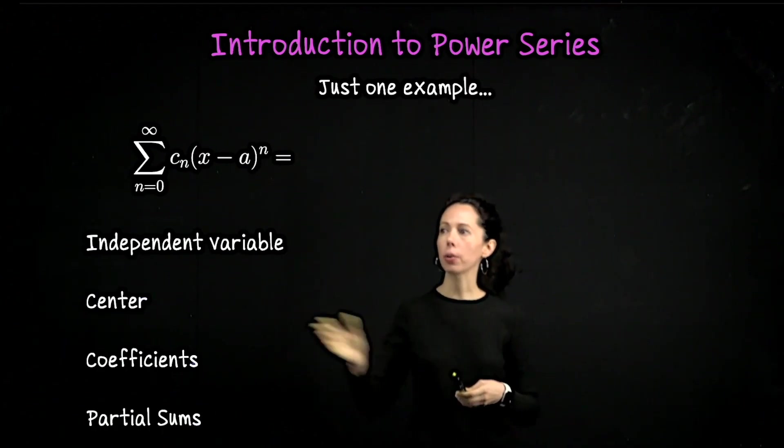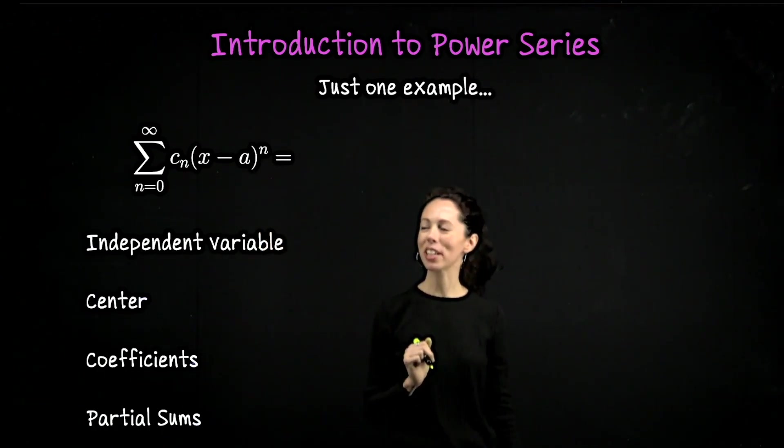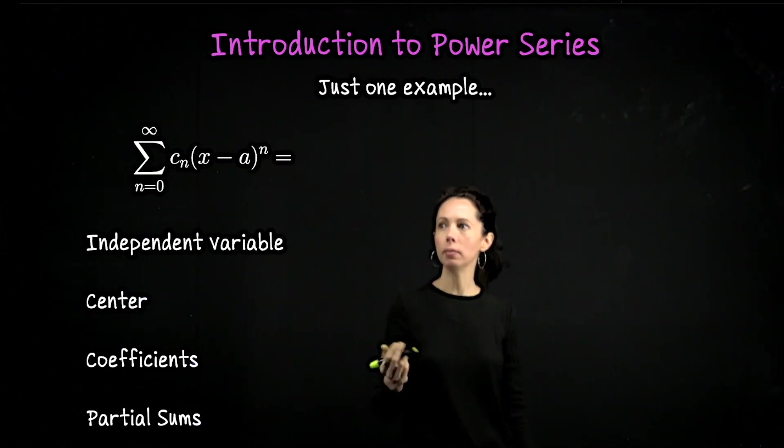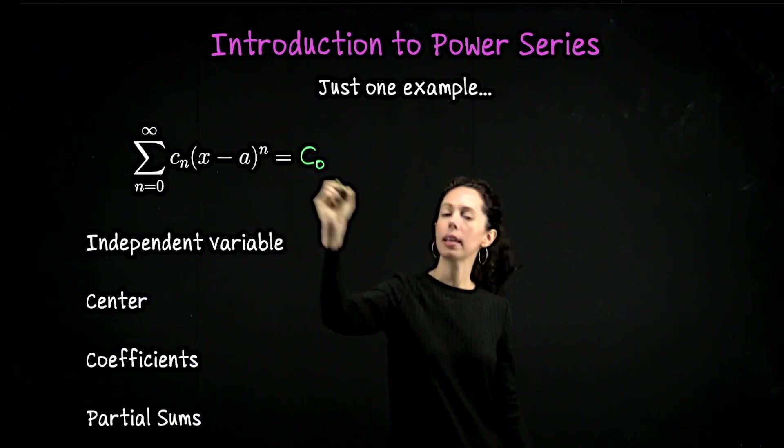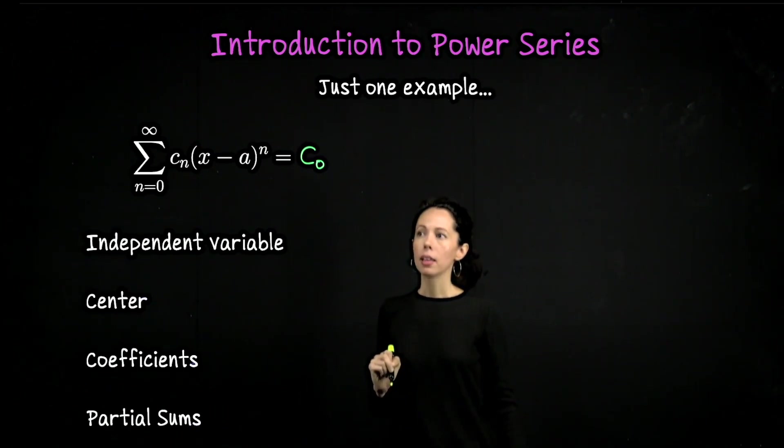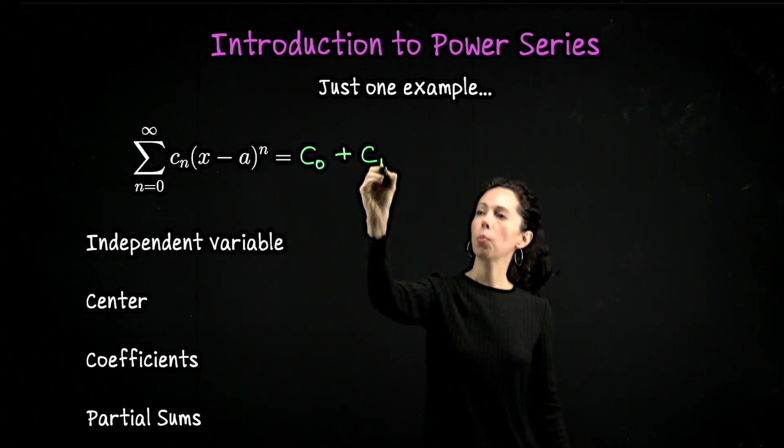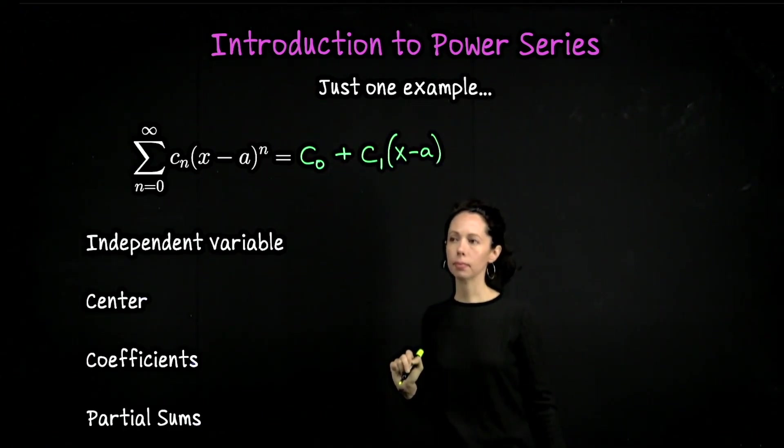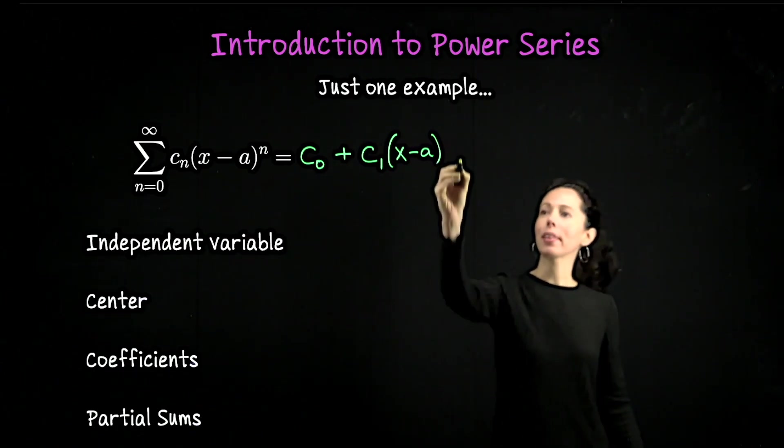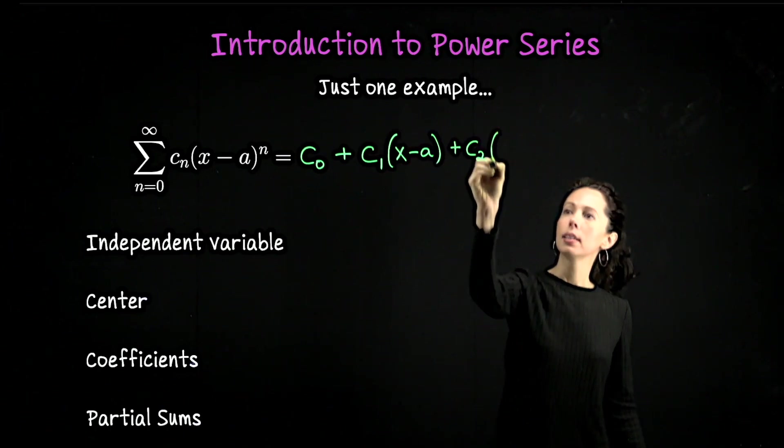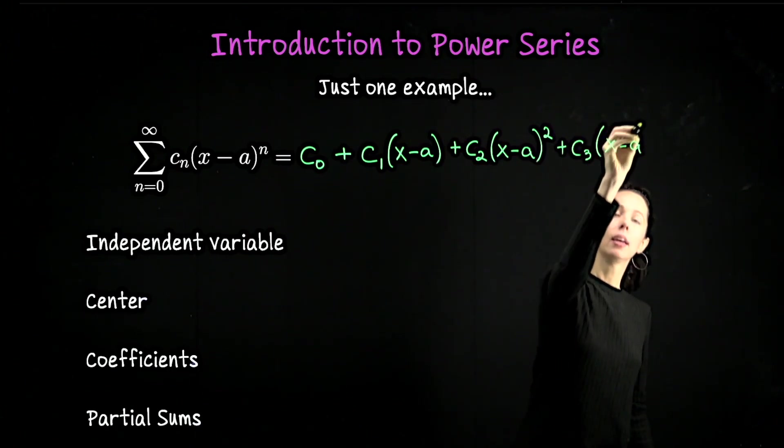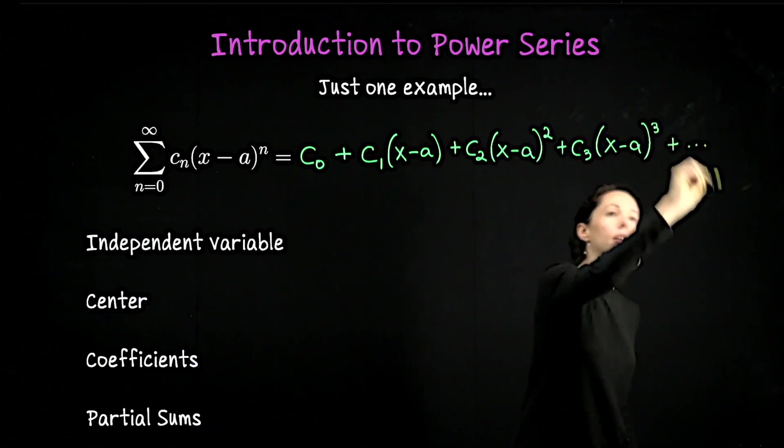The first thing I want to do is plug n equals zero in for n in this expression. That's going to be c_0 times (x - a) to the zero, but that's just one, so my first term is c_0. The next term I get by plugging in n equals one. That's going to give me plus c_1 times (x - a) to the one. The next term is when n equals two. We plug that in and we get c_2 times (x - a) squared, then plus c_3 times (x - a) cubed and we imagine doing that forever.